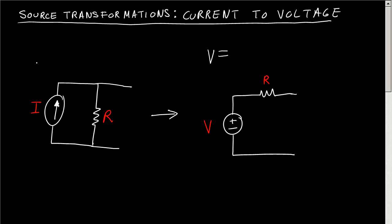The voltage is going to be equal to your current times your resistance. The resistance R is going to stay the same, and your voltage will have the positive sign in the direction of your current.